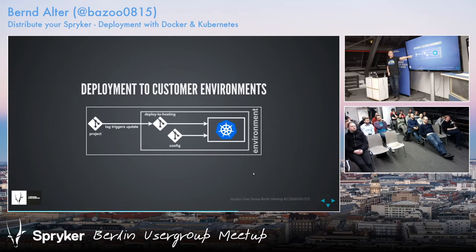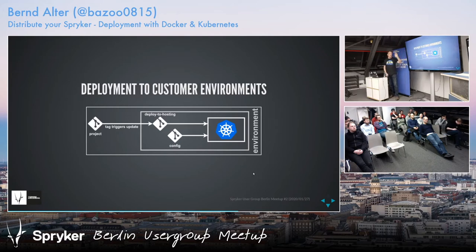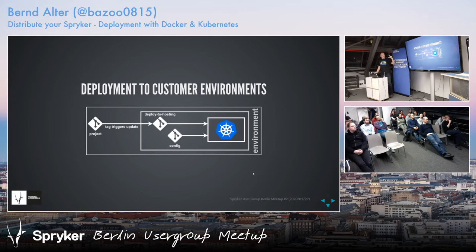We do this on tagging, triggering an update to a separate repo — we call it 'deploy to hosting'. This repo just contains all the Kubernetes stuff: the manifests for Kubernetes to deploy and configure the different services. The YAML files for Kubernetes are located in the project repo, and then they are merged into this deploy-to-hosting repo.